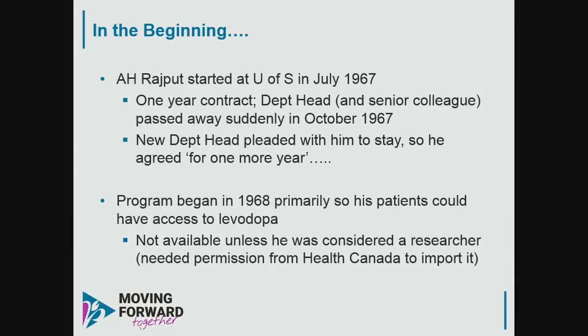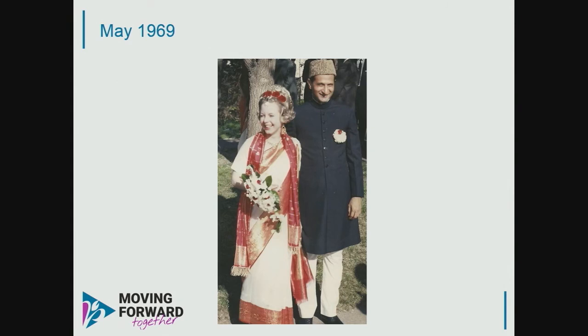Very briefly, the Saskatchewan Movement Disorders program: Dr. Rajput Sr. started at the University of Saskatchewan in July 1967 on a one-year contract. When his department head died in October 1967, the new department head asked him to stay. He gave one more year — but it has now been 52 years. The program began in 1968 basically to give patients access to levodopa, which at that time you could only get if you were a researcher. The early challenges were significant: no money, no manpower, no machines, no CT scanner, no cultural support for research. But he decided to create 'the fourth M' — material — and collaborated with neuropathology starting in the mid-1970s.